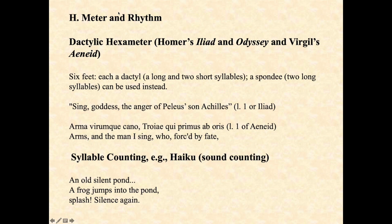Haiku, for example, counts the sound very strictly. You have a pattern of five, seven, and five syllables. 'An old silent pond' — five. 'A frog jumps into the pond' — seven. 'Splash, silence again' — five. So it's a pattern of five, seven, five — that's 17 syllables, not 15.